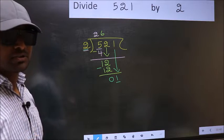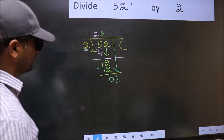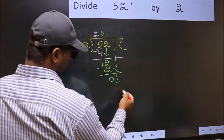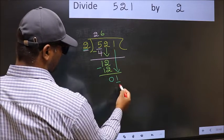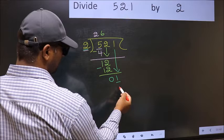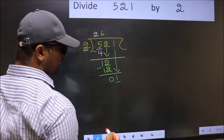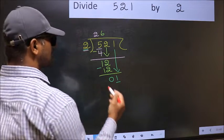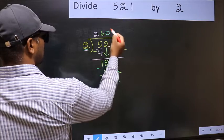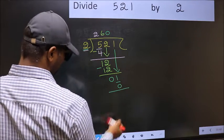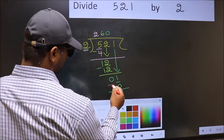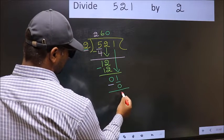Instead, what you should think of is, what number should we write here? If I take 1, I get 2 here. But 2 is larger than 1. So what we do is, we take 0. So 2 into 0, 0. Now you subtract. 1 minus 0, 1.